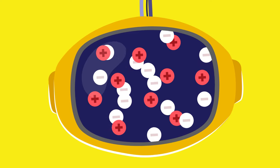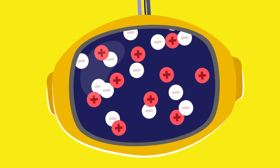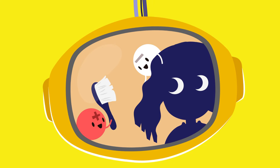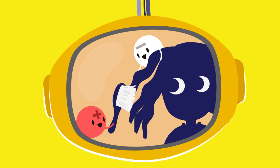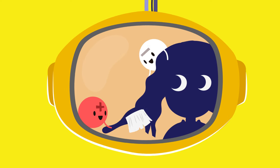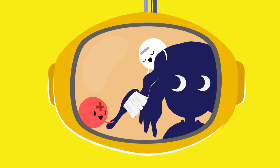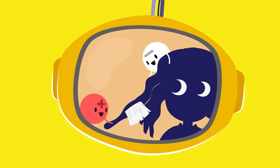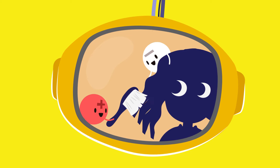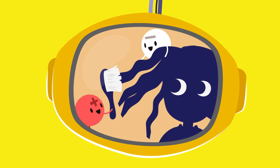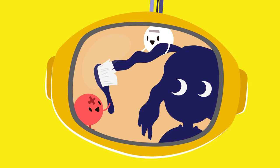When two objects rub against each other, they become charged with energy and the negative charges move, creating an imbalance. We call this imbalance static electricity. Sometimes static electricity causes two objects to stick together or attract each other, such as hair and a brush. When we comb our hair, the brush has more positive charges and the hair has more negative charges. Positive and negative charges really like each other — they attract each other.